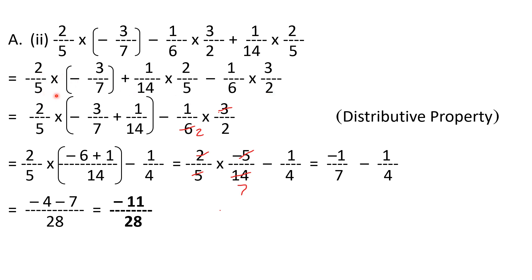Two by five is common in the first two terms, so I factor it out: two by five into bracket minus three by seven plus one by fourteen close bracket, minus one by six into three by two. For the separate term, three and six cancel to give minus one by four. For the bracket, LCM of seven and fourteen is fourteen: minus three by seven becomes minus six by fourteen, plus one by fourteen gives minus five by fourteen. So the expression becomes two by five into minus five by fourteen, minus one by four. Five and five cancel, two goes into fourteen giving minus one by seven.